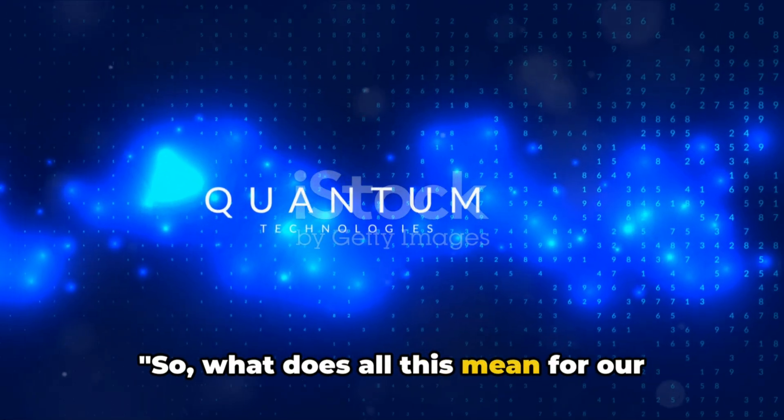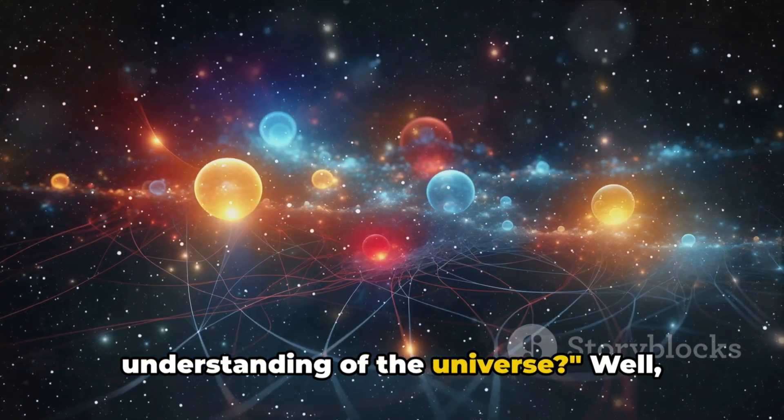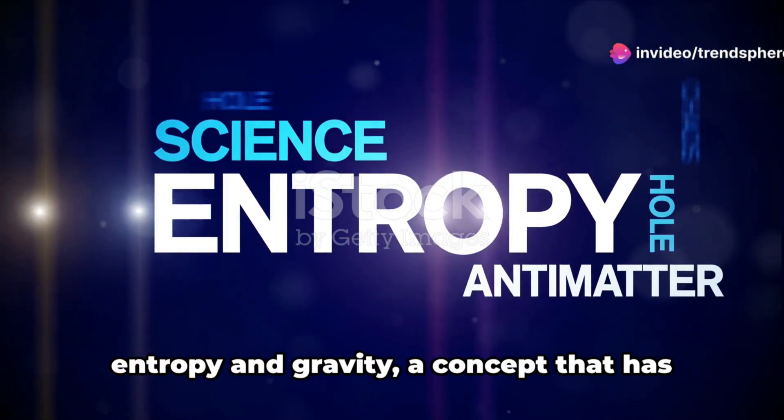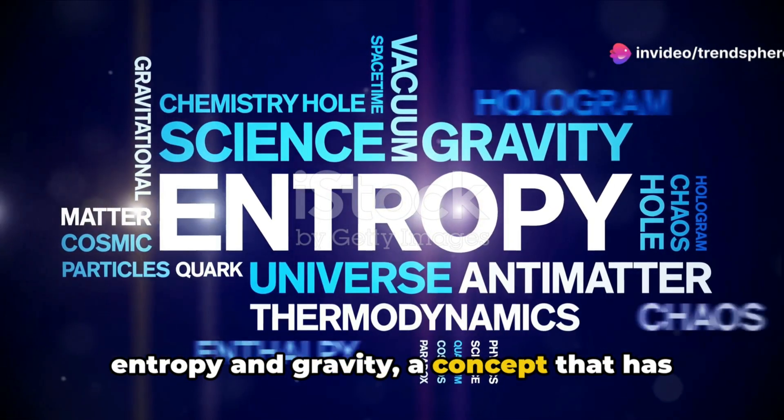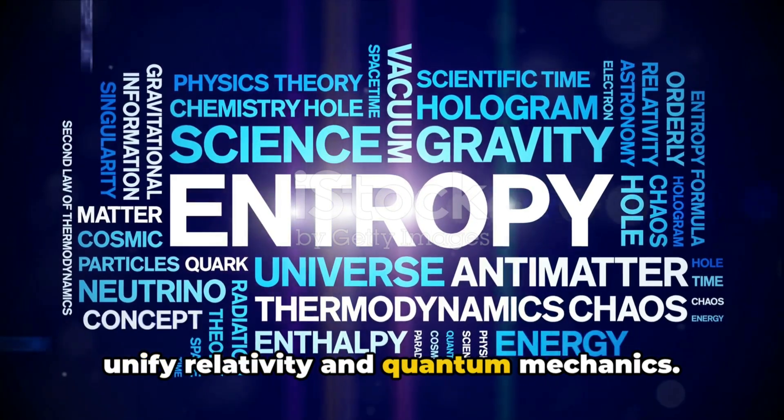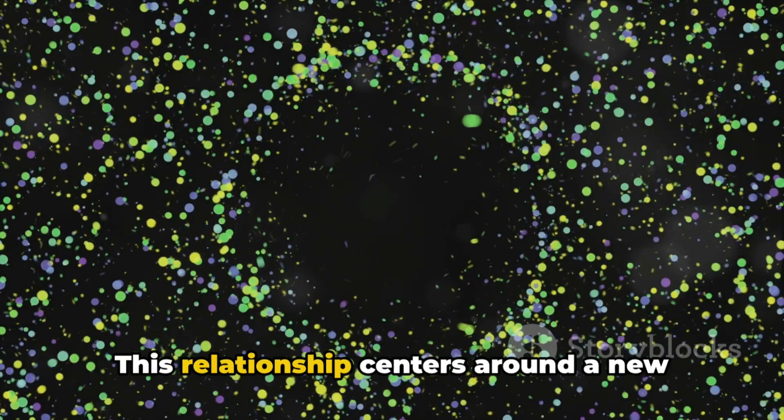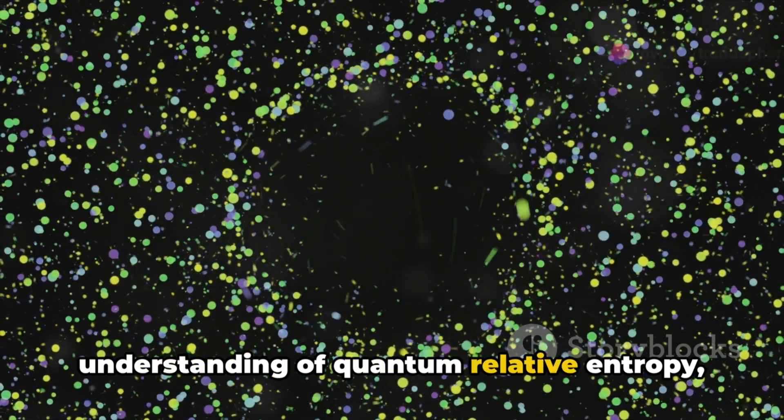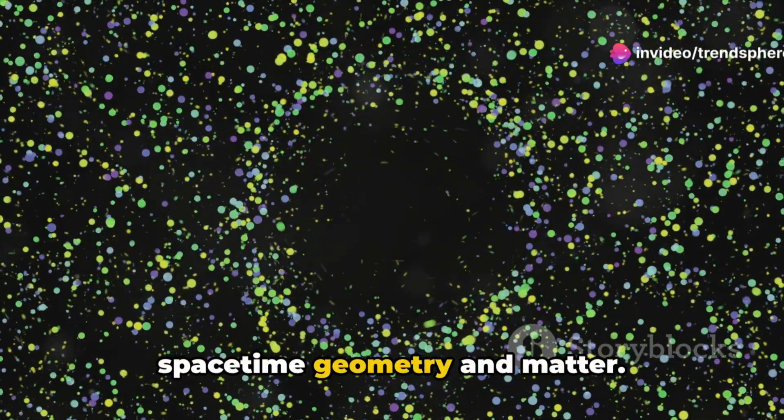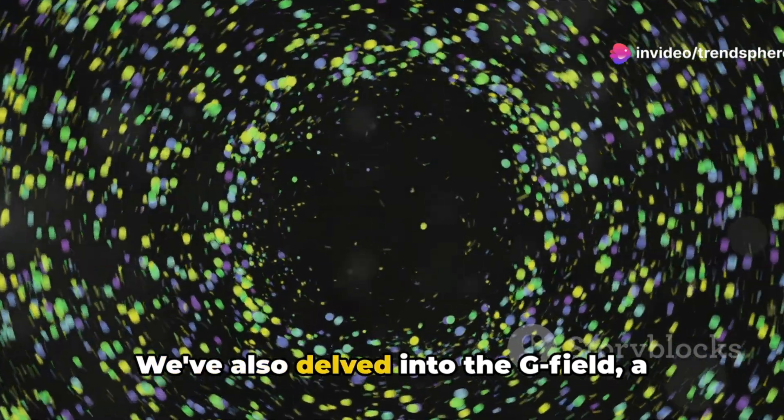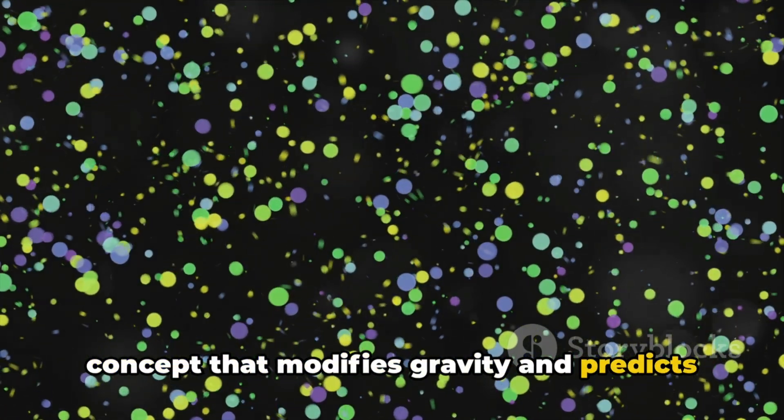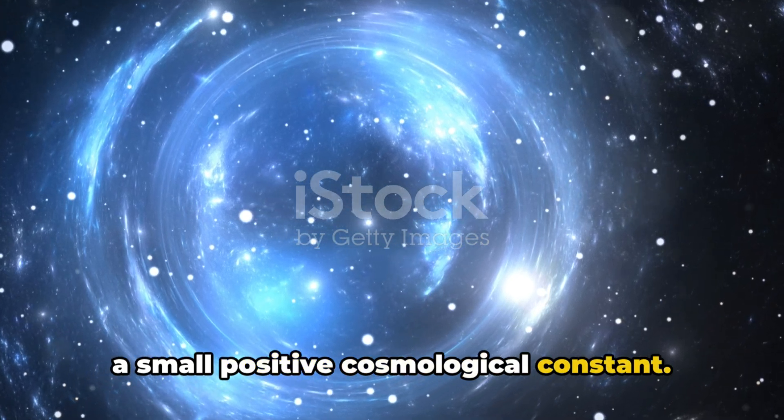So what does all this mean for our understanding of the universe? Let's break it down. We've examined the connection between entropy and gravity, a concept that has been proposed as a potential solution to unify relativity and quantum mechanics. This relationship centers around a new understanding of quantum relative entropy, a description of the relationship between space-time geometry and matter. We've also delved into the G field, a concept that modifies gravity and predicts a small positive cosmological constant.